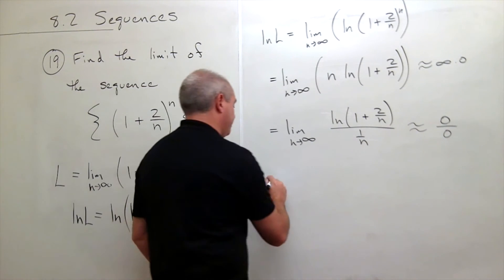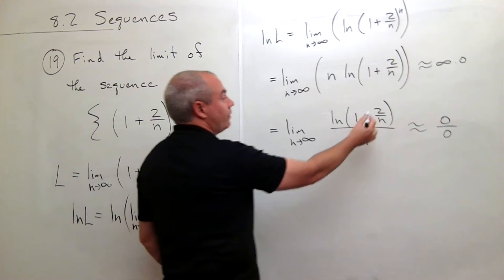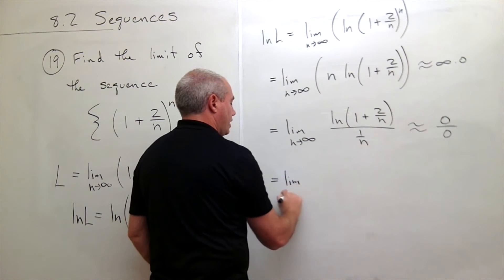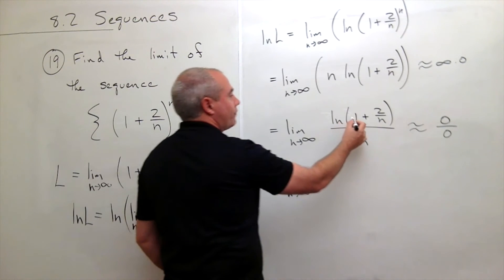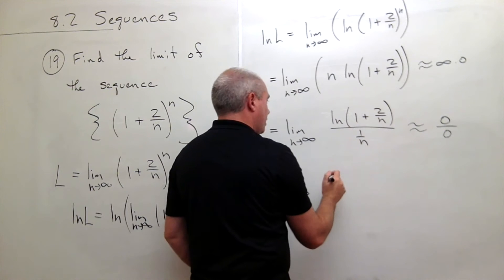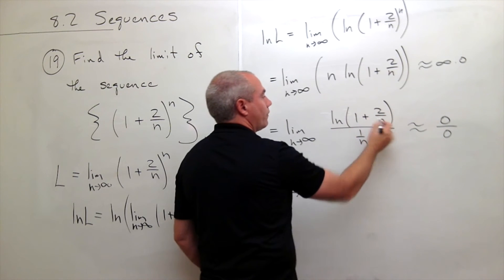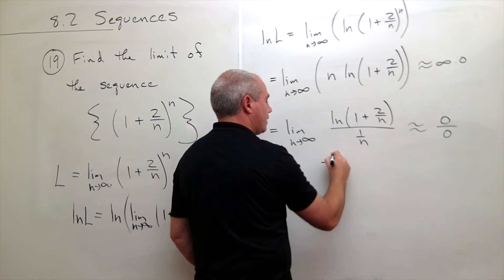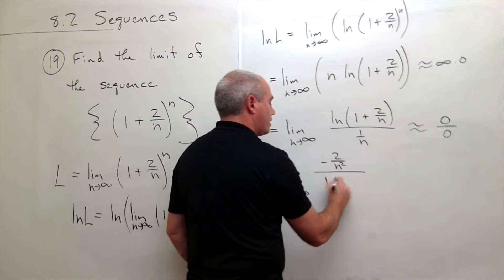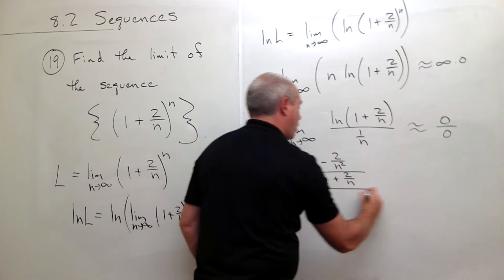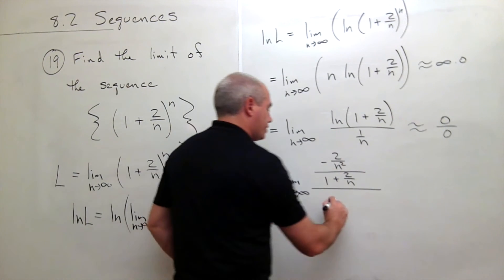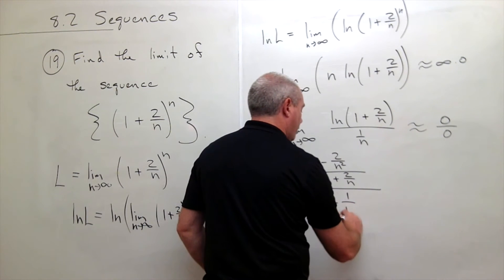Let's use L'Hôpital's rule — I take the derivative of the top and the derivative of the bottom. I get the limit as n goes to infinity. The derivative of ln of 1 plus 2 over n is: the derivative of 1 plus 2 over n, which is negative 2 over n squared, divided by 1 plus 2 over n. All of that divided by the derivative of 1 over n, which is negative 1 over n squared.